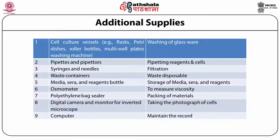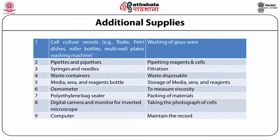The additional supply list is again a very large list. First priority should be given to culture vessels, which come in many forms: T25 flasks, petri dishes, roller bottles, multi-well plates like 6-well and 24-well plates, all required to maintain animal cell culture growth. Pipettes and pipettors, which may be disposable or autoclavable glass, are also required.